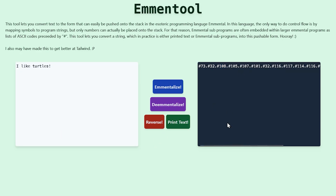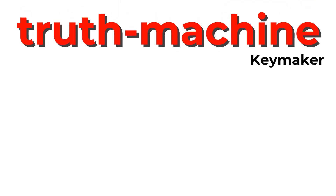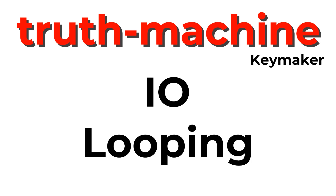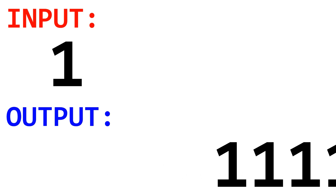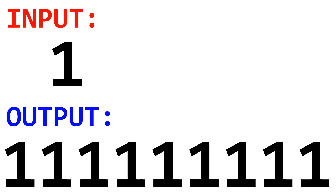Now let's make something more complicated, such as the Truth Machine program. Truth Machine, designed by solinks.org user Keymaker, tests IO and looping. First, it accepts one bit of input from the user. If that bit is a zero, the program responds with a zero and halts. If the bit is one, the Truth Machine prints one indefinitely.